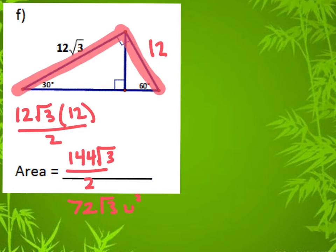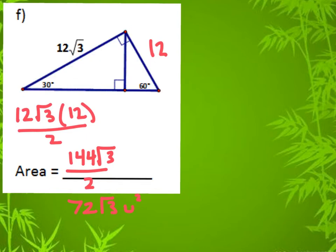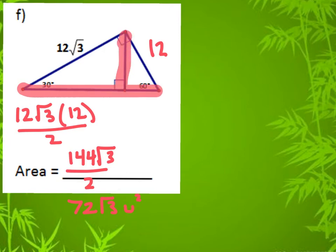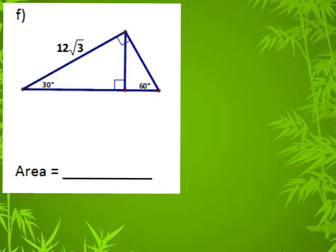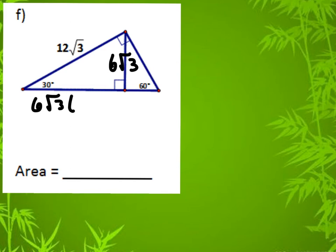Now let's try solving this a different way using this length and this length. Remember our answer was 72√3. This side is a hypotenuse in that triangle, so divide by 2 gives 6√3. Then 6√3 times √3 times √3 equals 18, and this small piece here would be 6√3 divided by √3, which is 6.